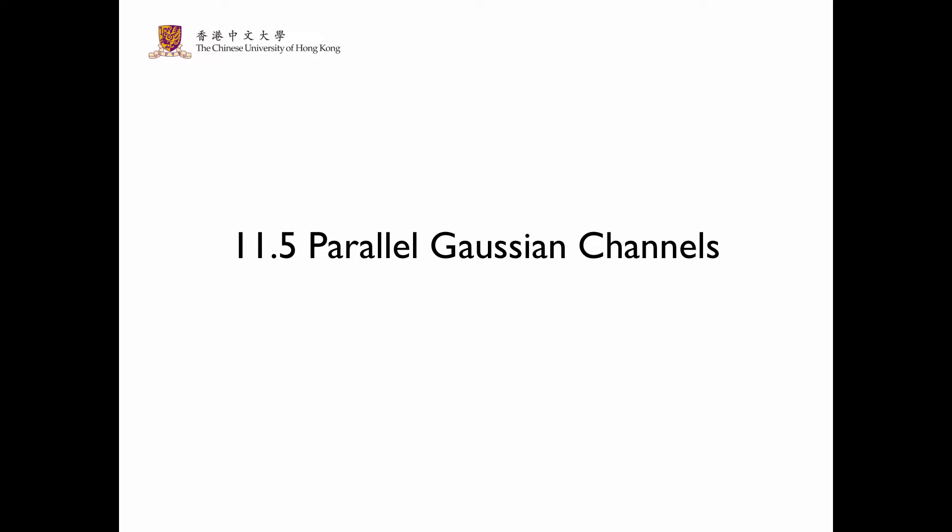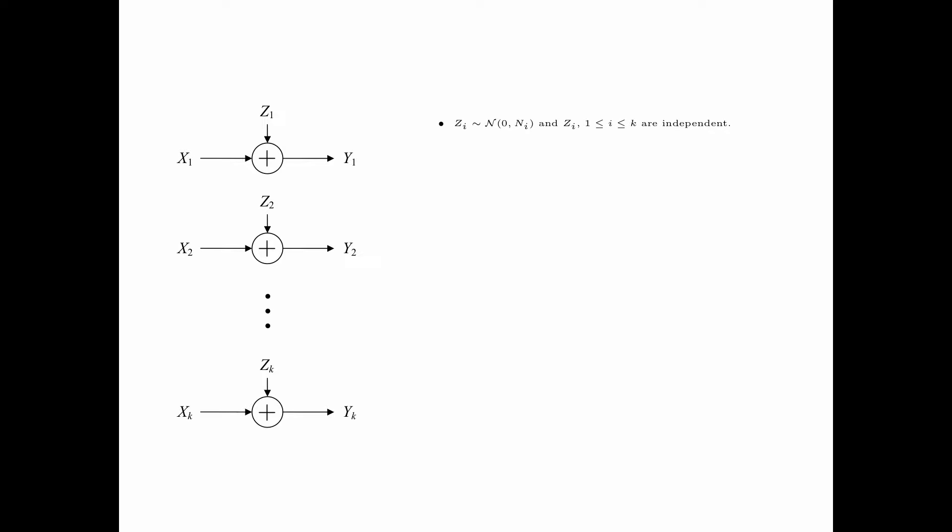In section 11.5, we discuss a system of parallel Gaussian channels. Consider a system consisting of k independent channels, where the i-th noise variable zi is a Gaussian random variable with mean 0 and variance ni, and z1 up to zk are mutually independent. The total input power constraint is the expectation of the summation i equals 1 up to k of xi squared, which is less than or equal to p.